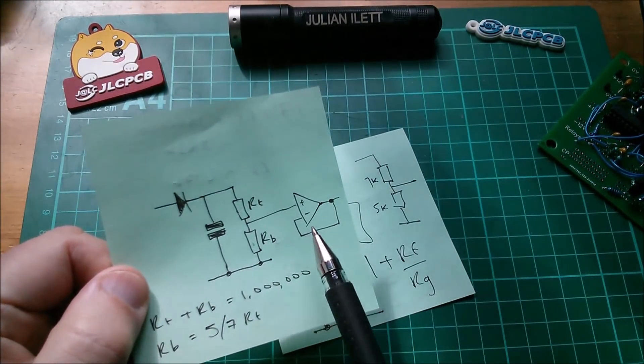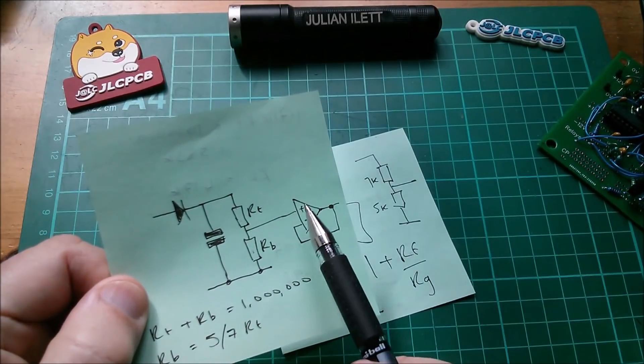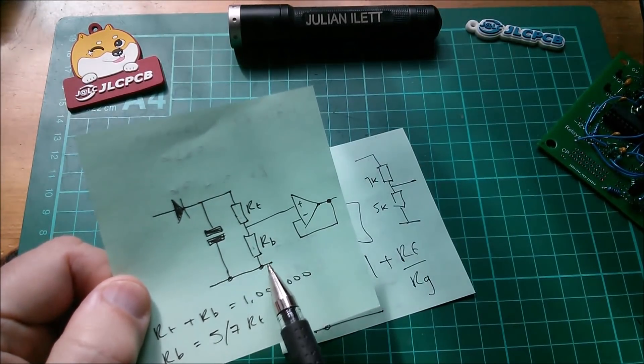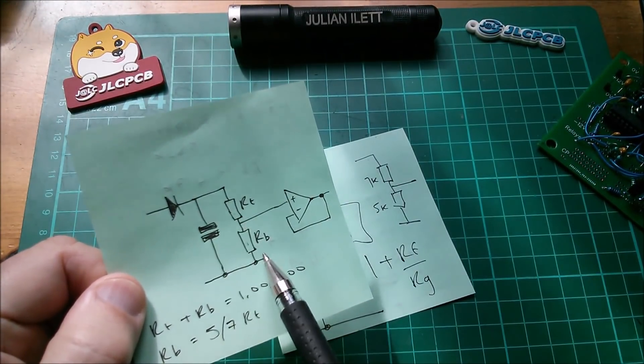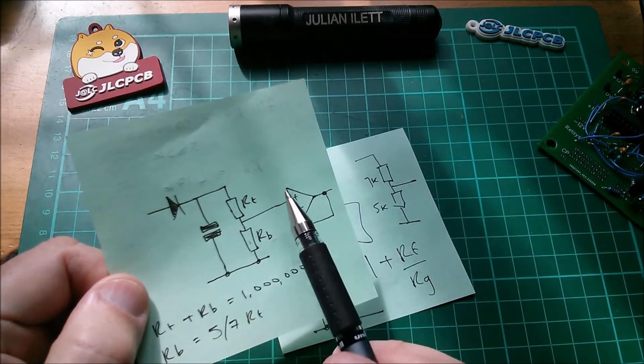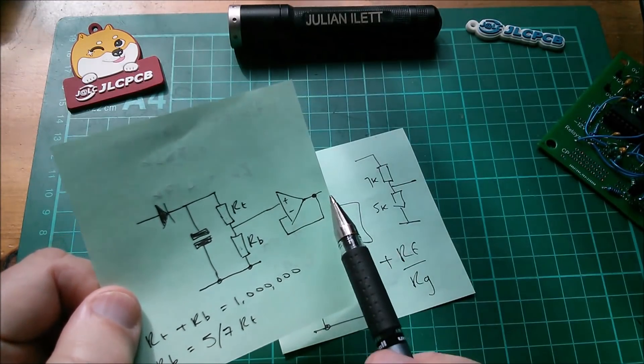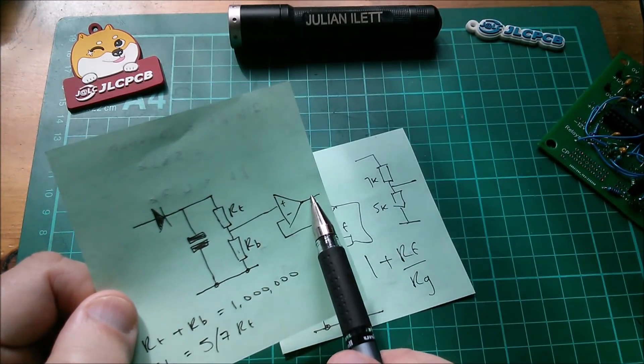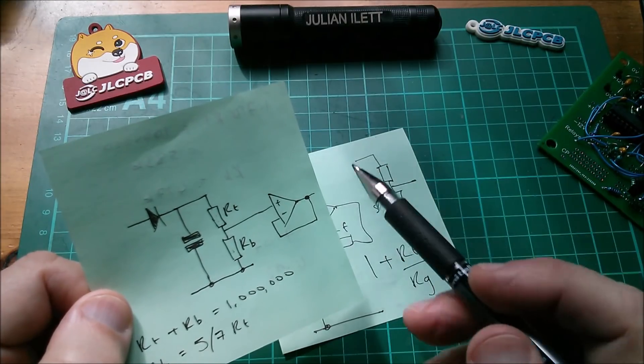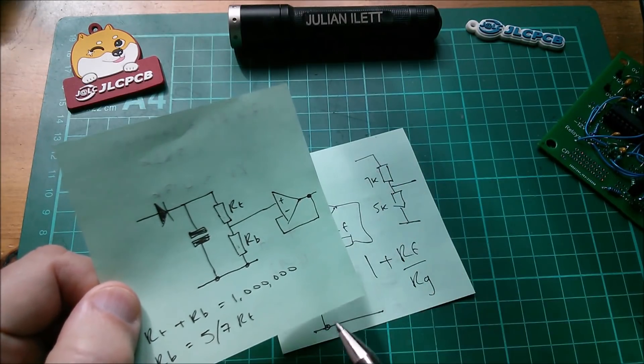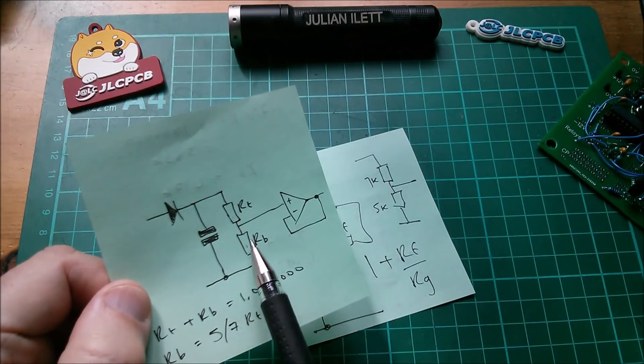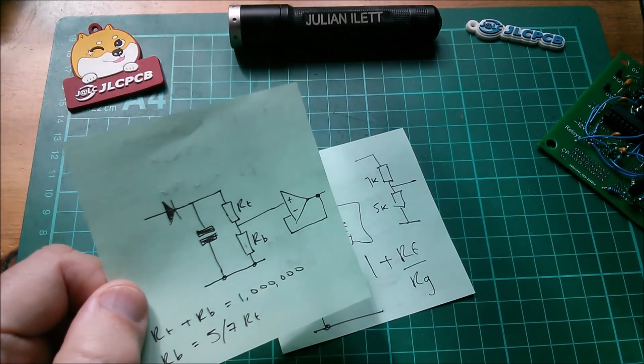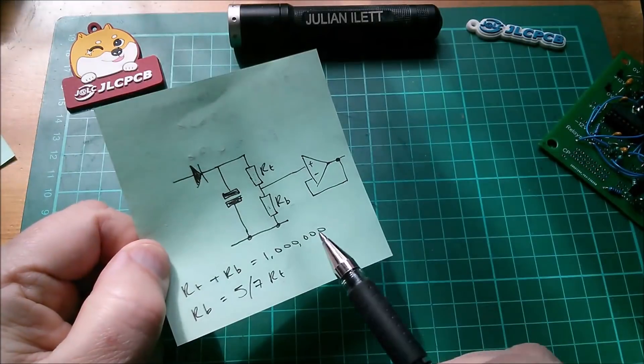So the answer I've decided is a unity gain buffer with a potential divider of sufficiently high resistance so it doesn't drain this capacitor too quickly, going into that unity gain buffer, and then that will present a low impedance going out to the Arduino's analog to digital input.